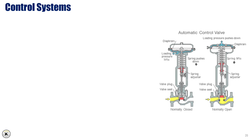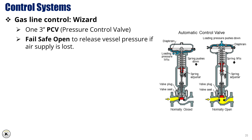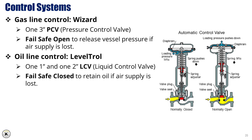The separator is equipped with different automatic control valves, including a gas line control — a 3-inch PCV pressure control valve, fail safe open to release vessel pressure if air supply is lost; an oil line control level troll — a 1-inch and 2-inch LCV liquid control valve, fail safe closed to retain oil if air supply is lost; and a water line control level troll.